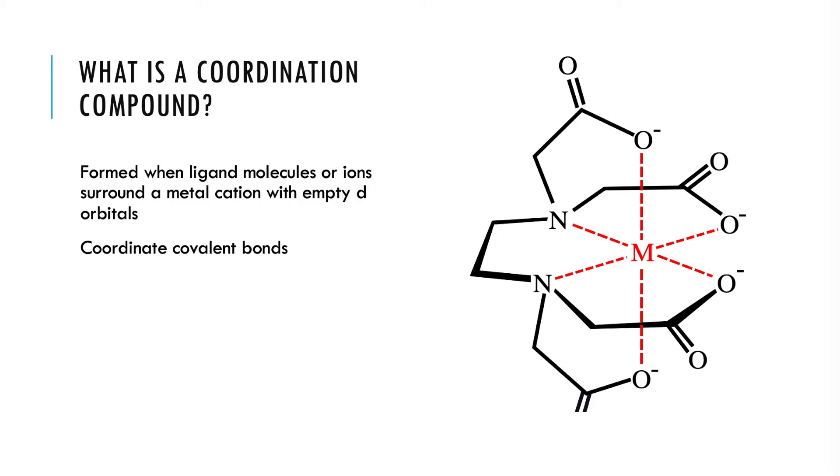So we'll start off with what is a coordination compound. A coordination compound is formed when ligand molecules or ions surround a metal cation with empty d orbitals. So you can see here that we have this metal cation in the middle, and the dashed red lines show the ligand-metal interactions. We call these coordinate covalent bonds. They're different than traditional covalent bonds because in a traditional covalent bond, each bonding partner brings one electron to the shared bond. But in a coordinate covalent bond, both electrons of the bond actually come from one of the two bonding partners, in this case the ligand.